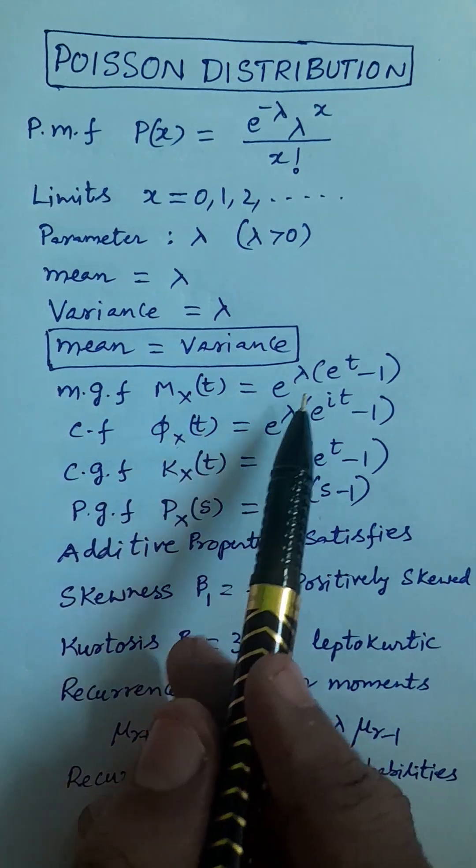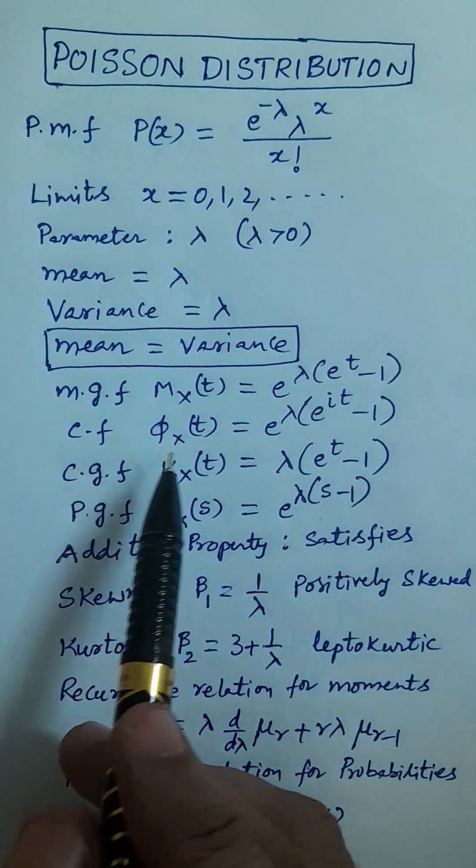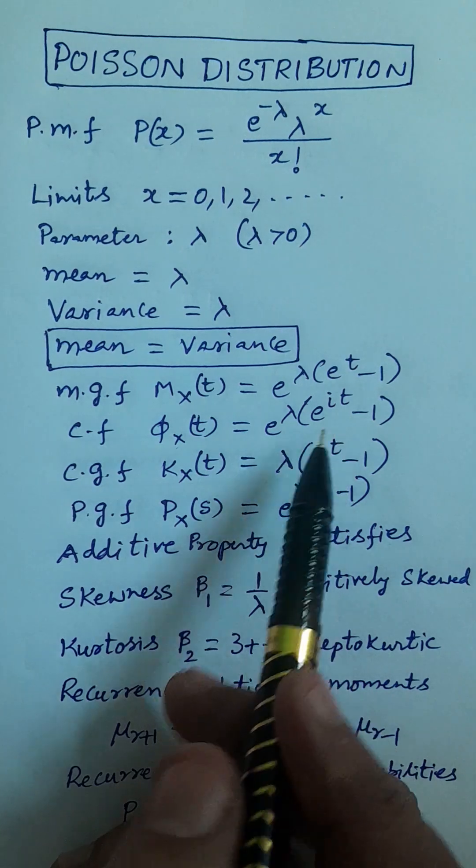MGF: M_X(t) is equal to E power lambda into E power t minus 1. CF: Phi_X(t) is equal to E power lambda into E power it minus 1.